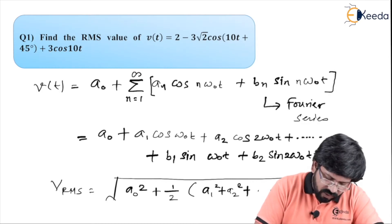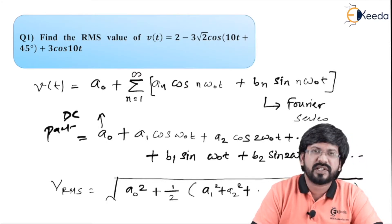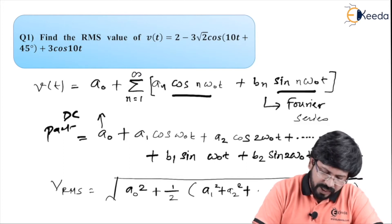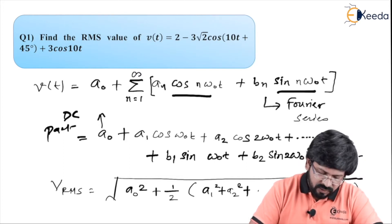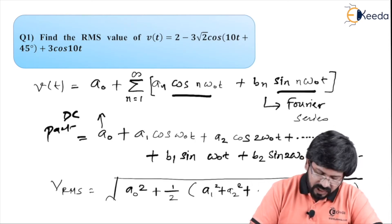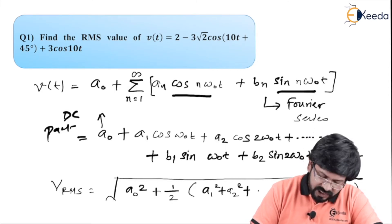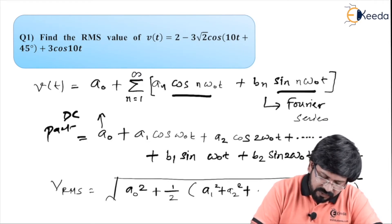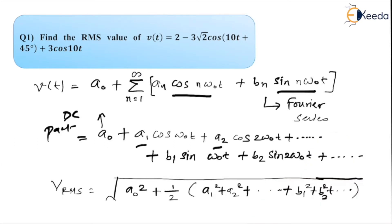In this case, a-naught is what we call the DC part. We know the fact that Fourier series expresses the given sinusoidal signal into a DC part as well as sinusoids — in terms of cos and sin where ω₀ is called the fundamental frequency. So if your signal appears to be a Fourier series, you calculate RMS equal to under root of DC part squared plus half times the sum of squares of all amplitudes.